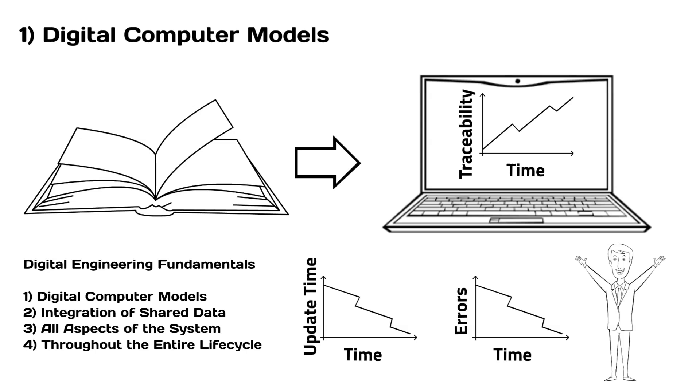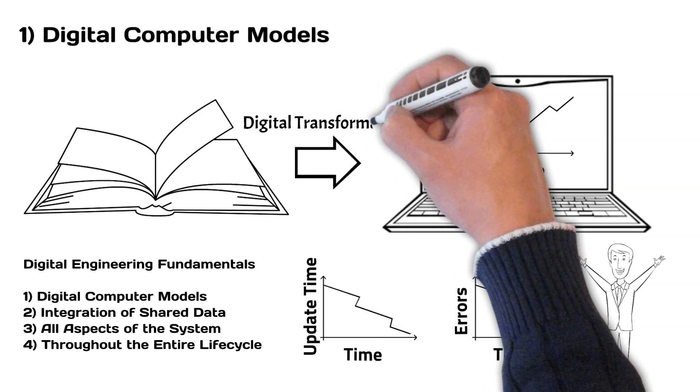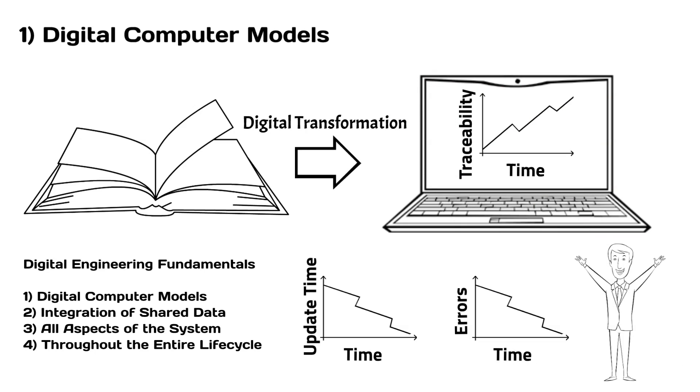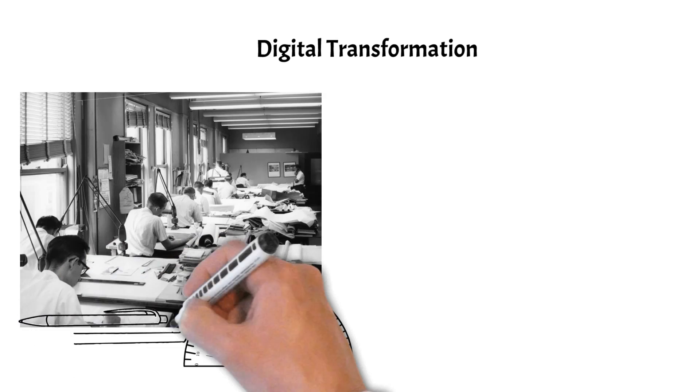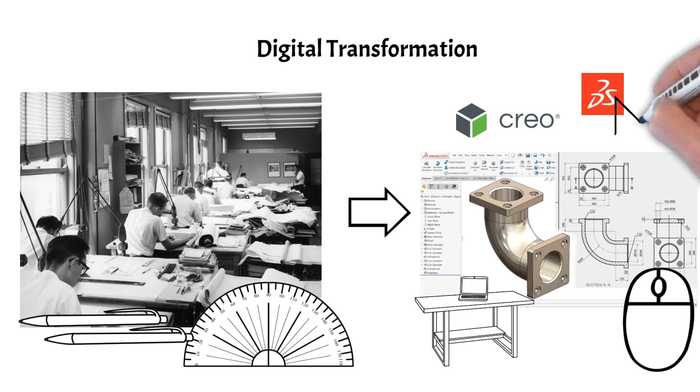We call this movement from a document-centric approach to model-centric approach digital transformation. An example of the digital transformation is engineers and architects making the switch from paper and pencil to 3D modeling softwares such as CATIA, SolidWorks, or Creo. All other disciplines including systems engineering will follow this transformation.